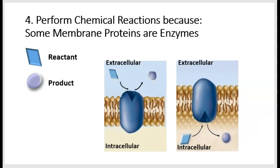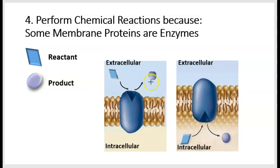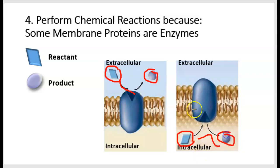Another function of membrane proteins is that some proteins are enzymes. Even though they're embedded in a membrane, they can still perform or catalyze a chemical reaction. In the picture on the left, a reaction happens in the extracellular environment — the reactant binds to the membrane protein enzyme, and a product is formed. But that could just as easily happen intracellularly, where the reactant is within the cytoplasm and gets turned into a product. So membrane proteins can be enzymes, just like any protein.